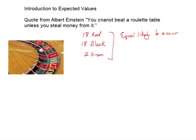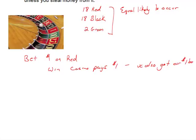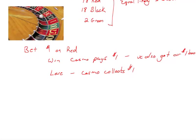We want to see what happens as we play this game a large number of times. We're going to bet one dollar on red. If we win, the casino pays us one dollar and we get our dollar back. If we lose, the casino collects our dollar. It would be nice if we could win every time, but that's not the way life works.